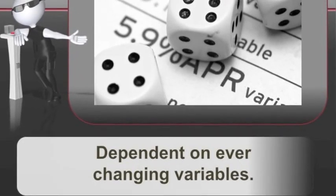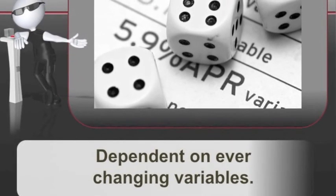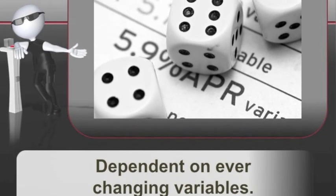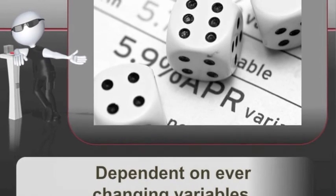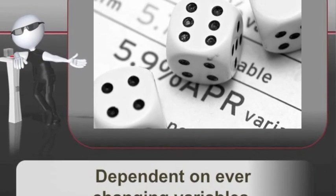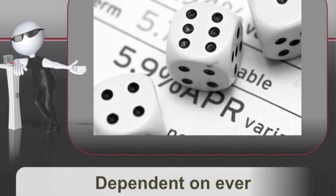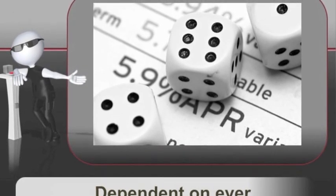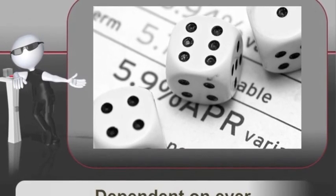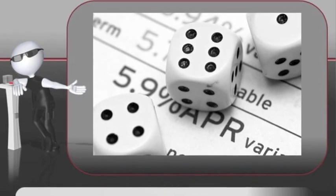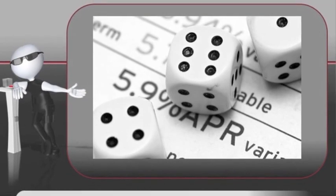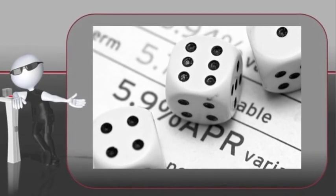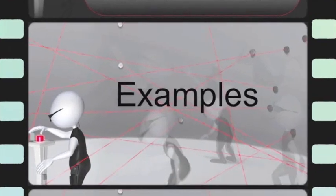The last disadvantage we focused on was that it is dependent on ever-changing variables. AV and tech is an ever-advancing, quickly-advancing industry, with different application standards and technology constantly changing, so having consistency through the developmental process can sometimes be difficult and challenging. These are the disadvantages we identified in the Bergman and Moore model.